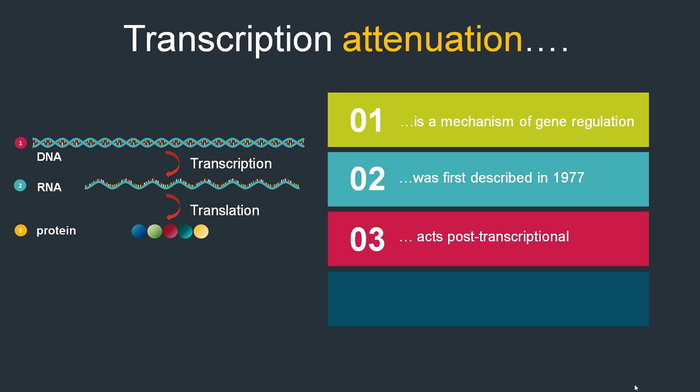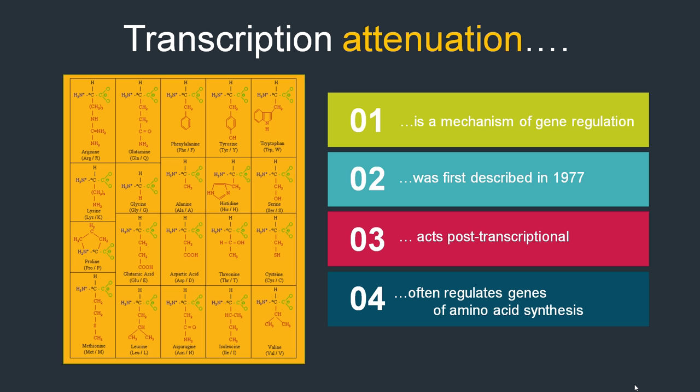Since transcription and translation are coupled in bacteria, many things are happening at the same time. When you read about attenuation, you mostly read about the example of the tryptophan operon in E. coli, since here attenuation was discovered — until now it's the prime model. But keep in mind, attenuation actually regulates tryptophan biosynthesis in many bacteria, not only E. coli.